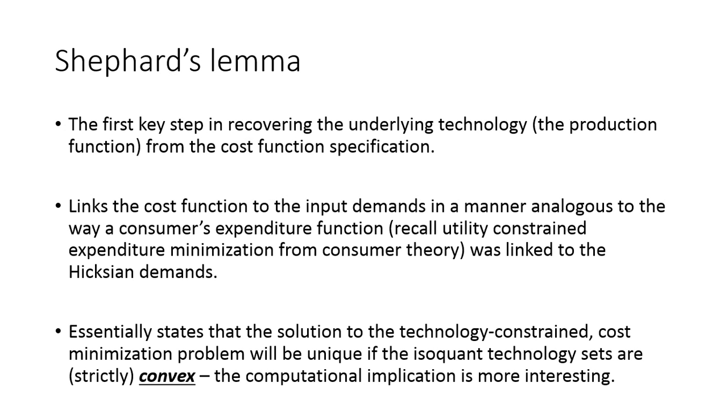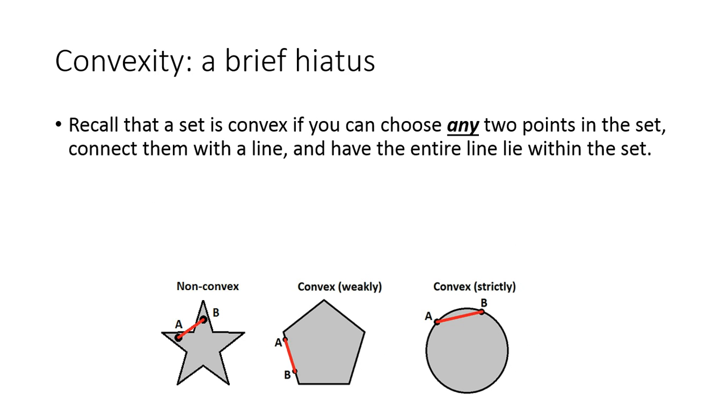The crux of the lemma is that it essentially states that the solution to the cost minimization problem will be unique, meaning there'll be only one bundle that satisfies this problem, provided that the technology sets are strictly convex. And there's an interesting computational implication that we'll get to in a minute. But let me just explain this strictly convex term because we talked about convexity before.